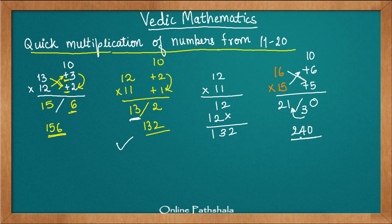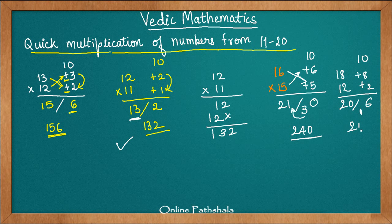Another quick example: 18 multiplied by 12. Once comfortable, you can skip writing the base 10 and just note plus 8 and plus 2. 8 times 2 is 16, so 6 goes in the units place and 1 is carried. 18 plus 2 is 20, plus the carry of 1 is 21, giving the answer 216.